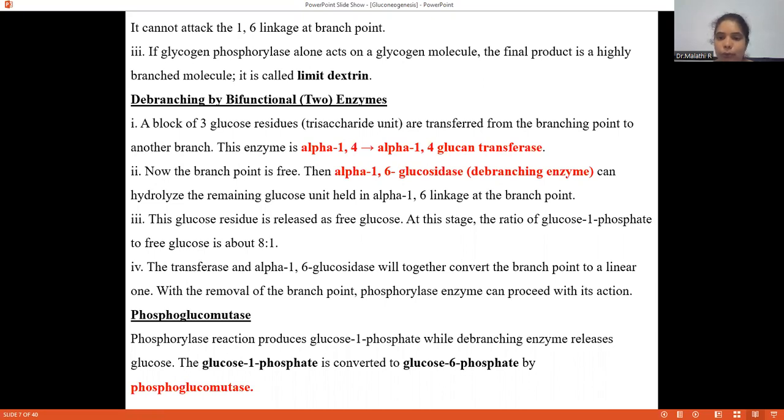The previous alpha-1,4 linkage mediated glucose is released as glucose-1-phosphate whereas this glucose will be released as free glucose. At this stage, the ratio of glucose-1-phosphate to free glucose will be about 8 to 1 ratio.